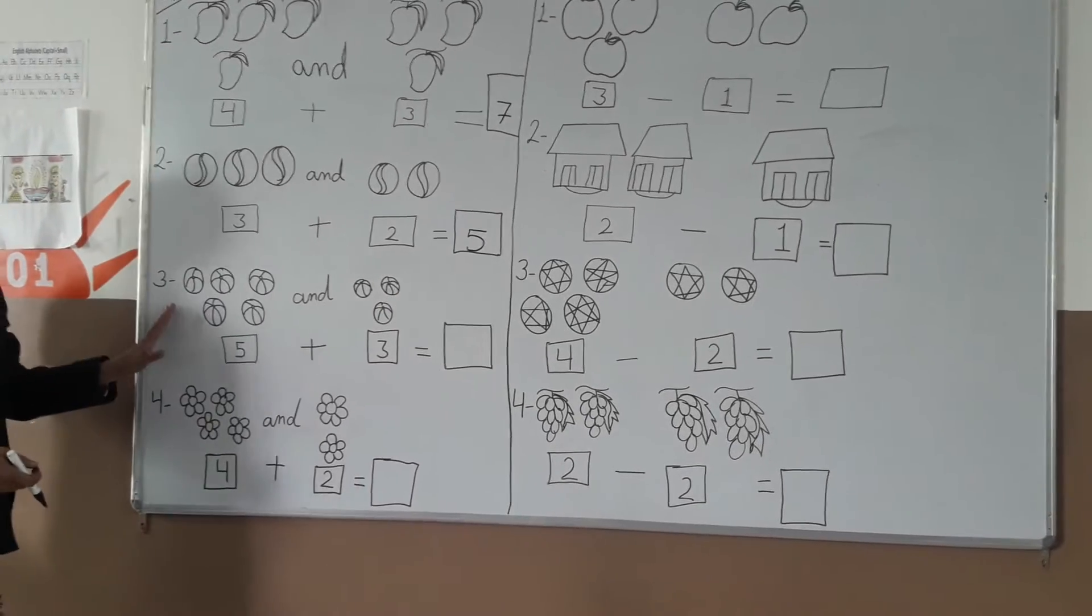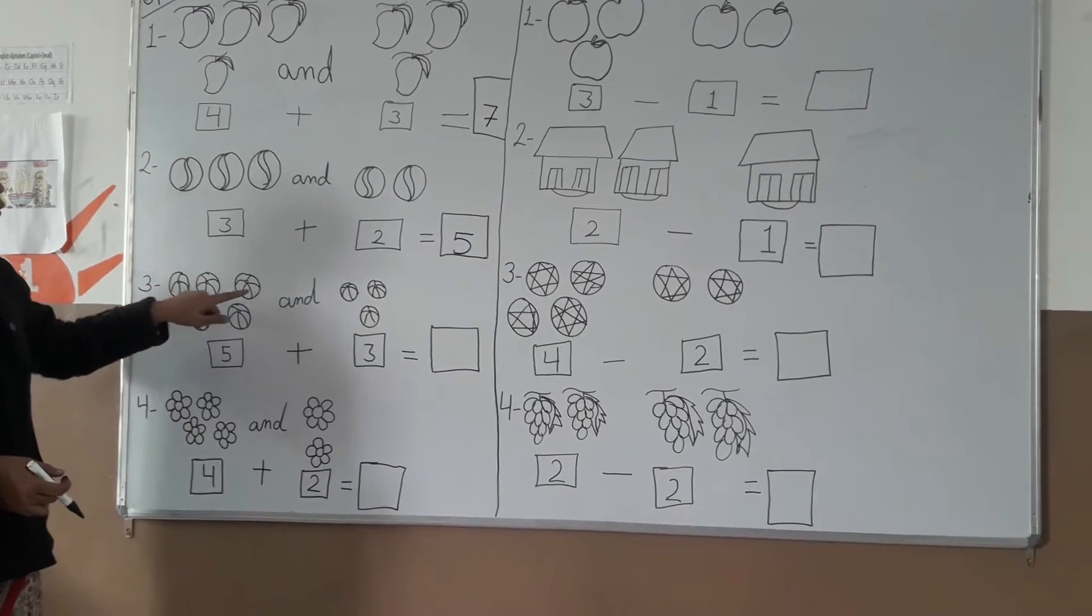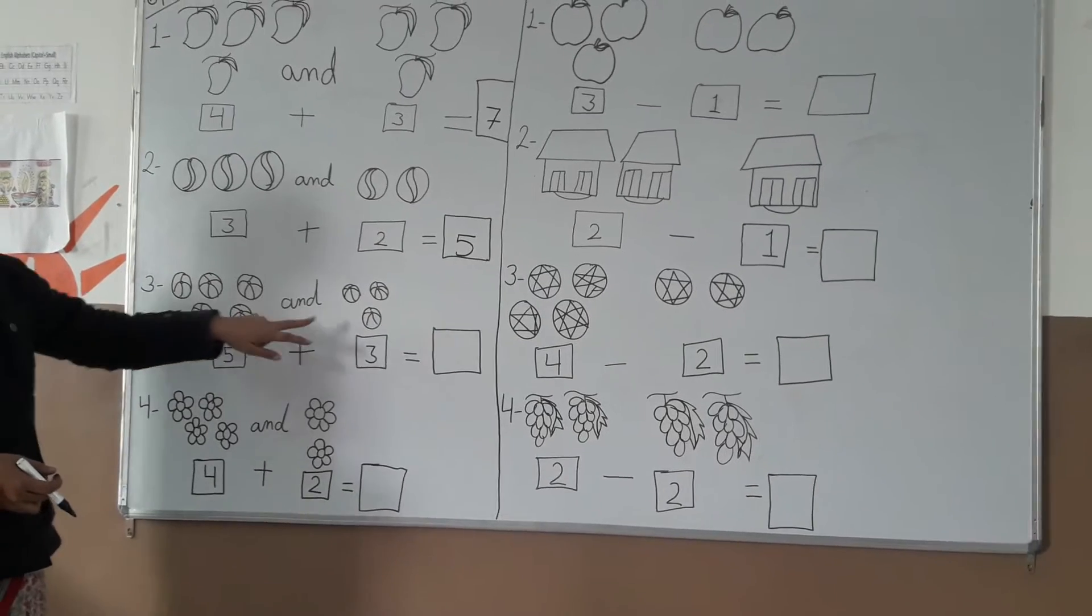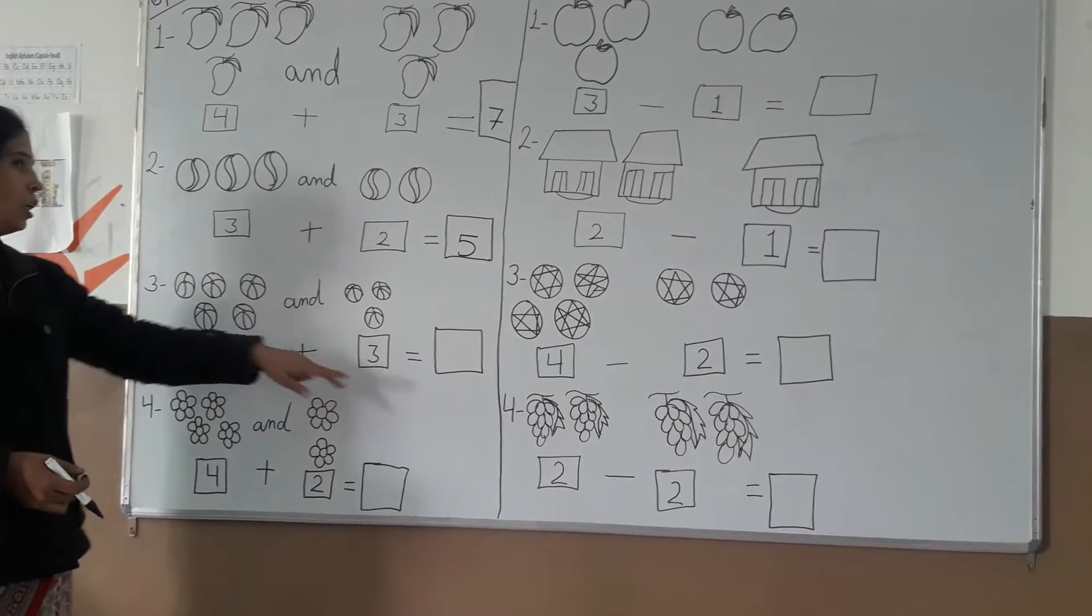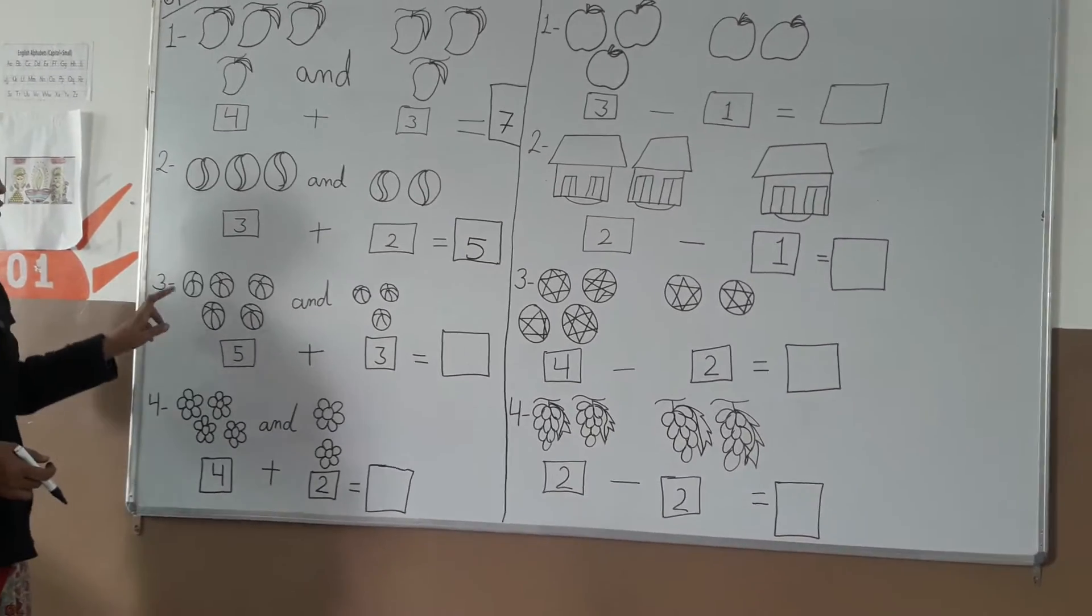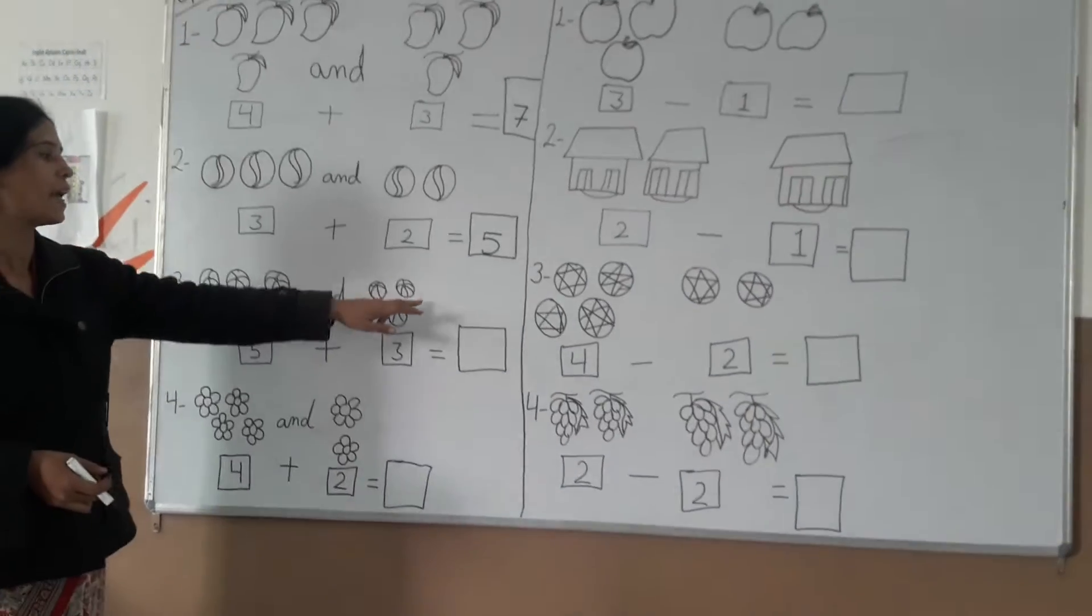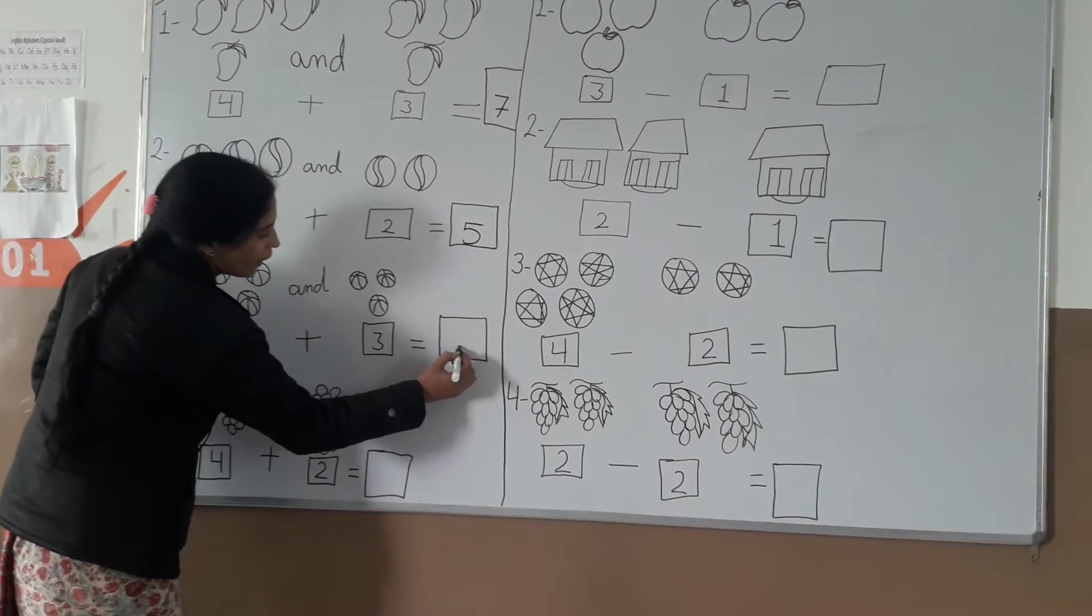Next is balls. One, two, three, four, five. Five. And balls: one, two, three. Three. Counting together: one, two, three, four, five, six, seven, eight. Write it: eight.